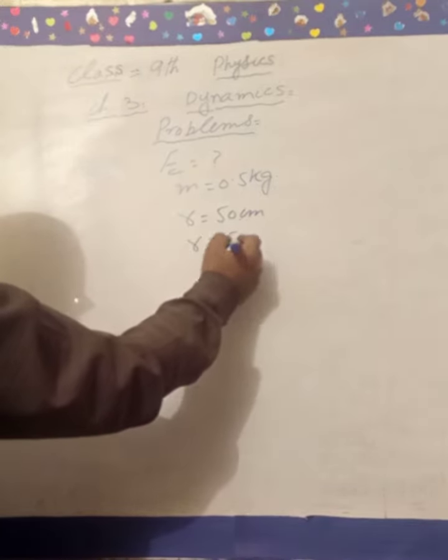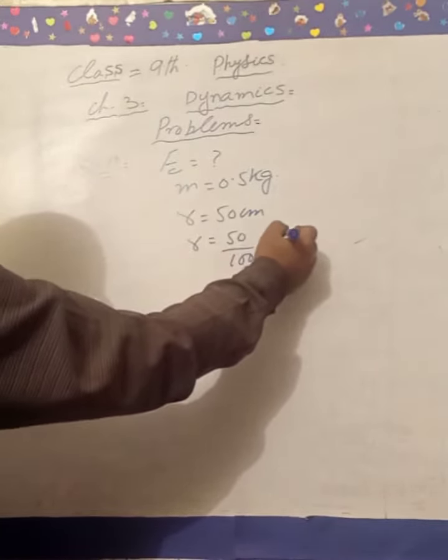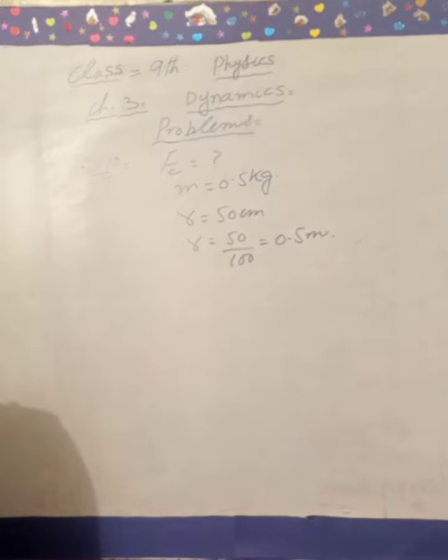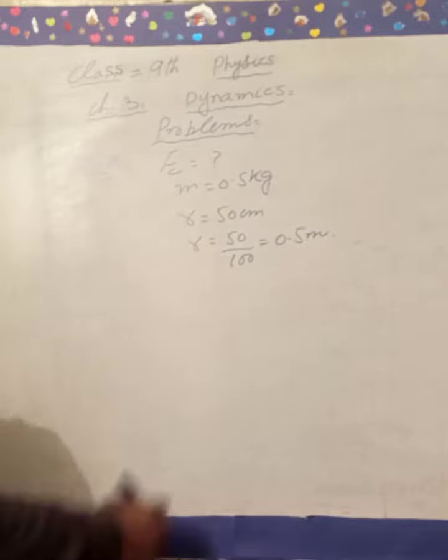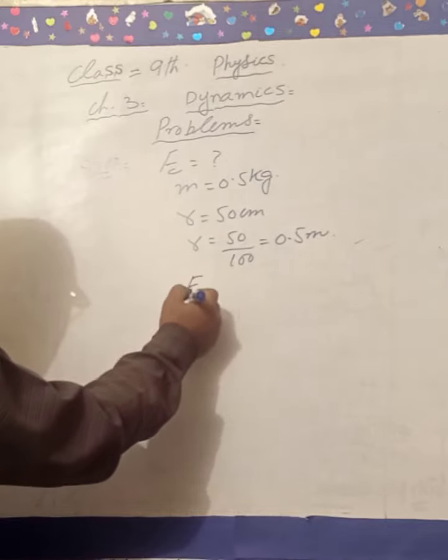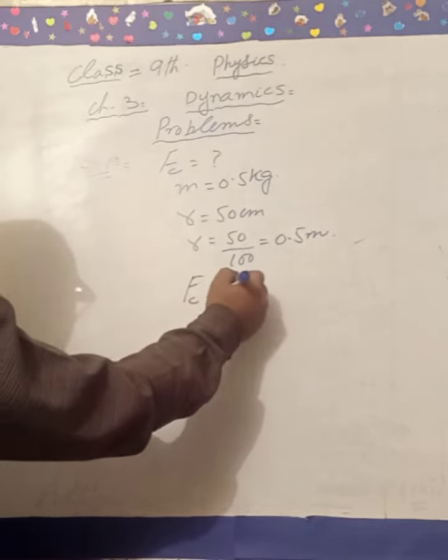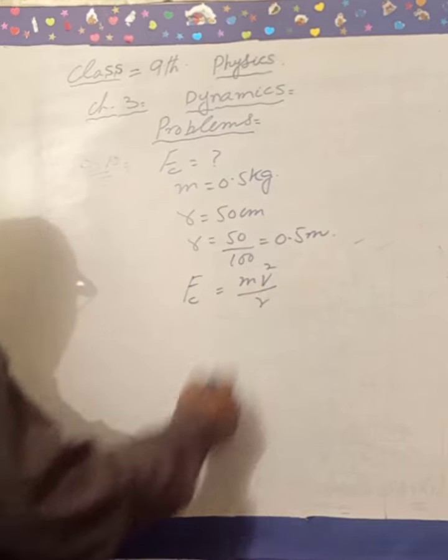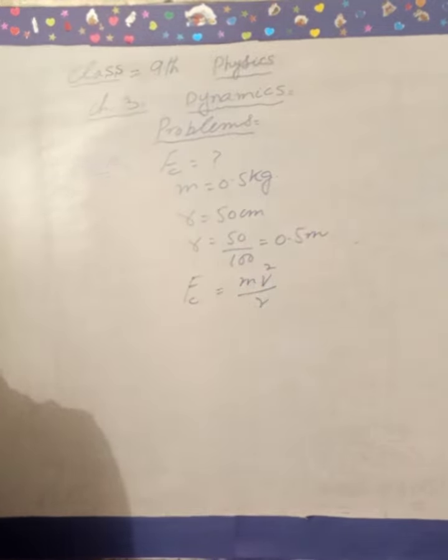Convert to meters: 50 over 100 equals 0.5 meters. Now we need to find the centripetal force. The centripetal force formula is Fc is equal to m v square over r.